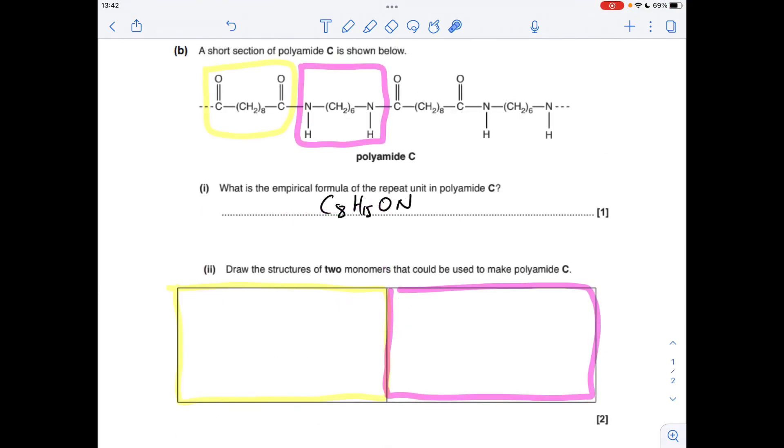And for the last part, we've just got to come up with the monomers to make polyamide C. So I've highlighted the two key parts. So this bit here is going to be one monomer. I'll put it in there. There's the other one, which is going to go in there.